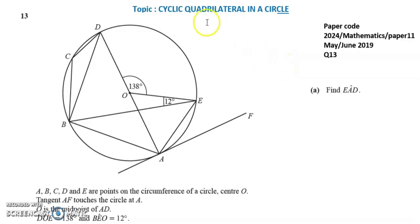Hi, today we are going to solve a question from the topic cyclic quadrilateral in a circle. In this circle there are a lot of lines along with two given angles, 12 degrees and 138 degrees, and a tangent AF. Remember that a tangent is a line that touches the circle at one point at the circumference. In part A, we are asked to find angle EAD, which is marked with red color and I name it angle theta.